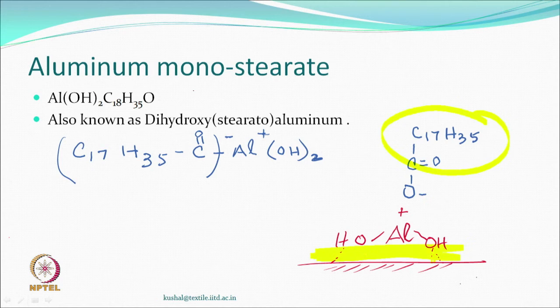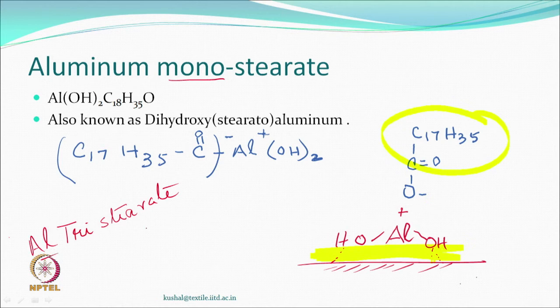The important part of aluminum monostearate is the stearate group, which provides hydrophobicity. The aluminum with its two hydroxides ensures the compound is not water soluble and can adhere to the textile surface through some type of attraction. You can also use aluminum di-stearate or tri-stearate, which create a very large molecule with more stearate groups, very low water solubility, and therefore better permanency.